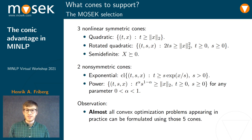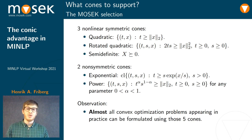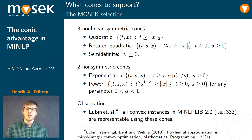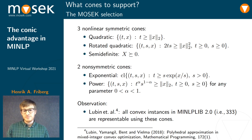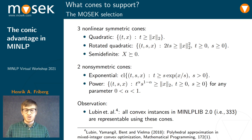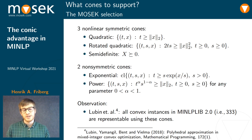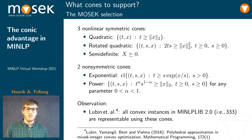One observation we made over the years is that almost all convex optimization problems appearing in practice can be formulated using those five cones. You can look into a paper where they show that all convex instances in the MINLP LIB 2.0 are representable using these cones. In general, the reformulation gives a boost in solving time, and in that paper they even show that previously unsolved instances can now be solved with this reformulation.